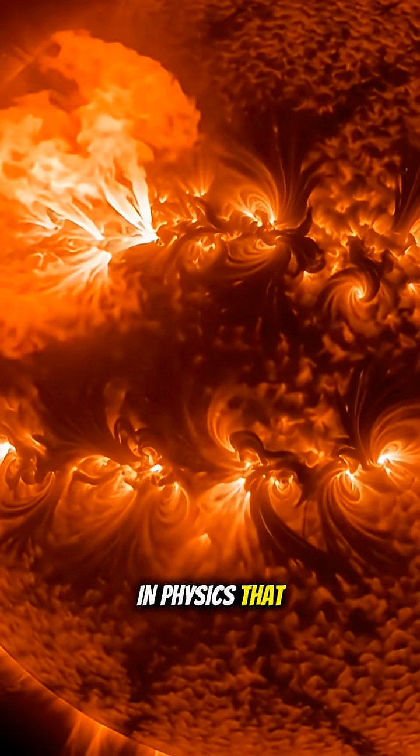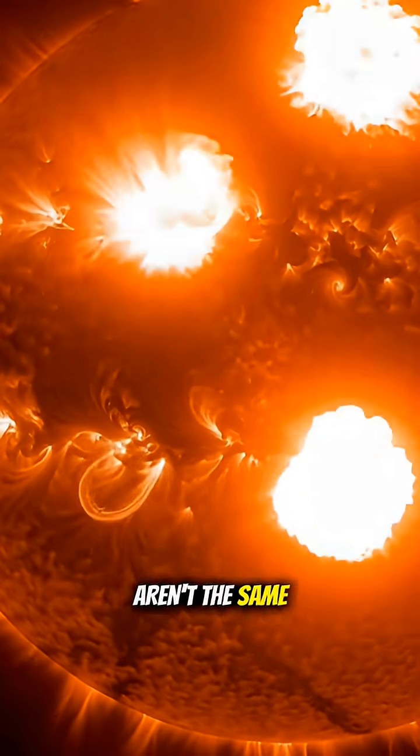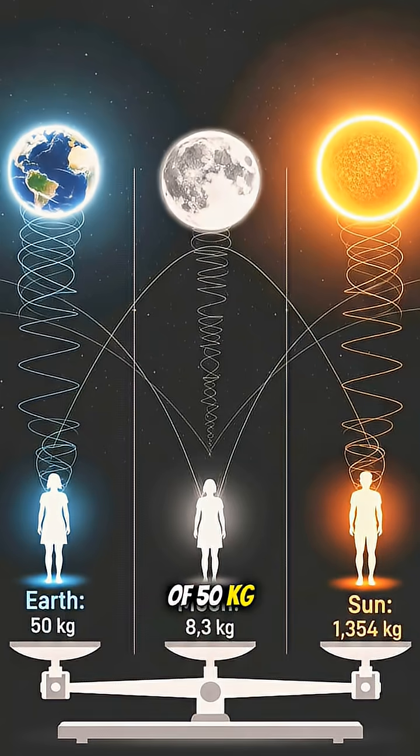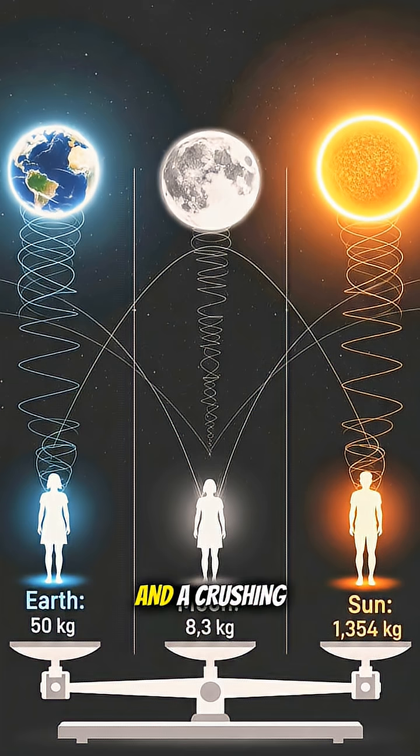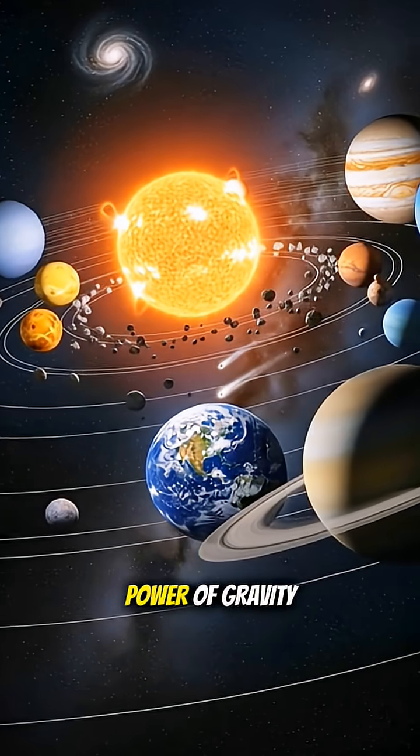You probably learned in physics that mass and weight aren't the same. If a person has a mass of 50 kilograms, they weigh 50 on Earth, just 8.3 on the Moon, and a crushing 1,354 kilograms on the Sun. That's the insane power of gravity.